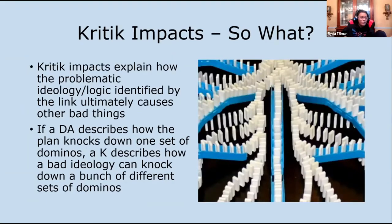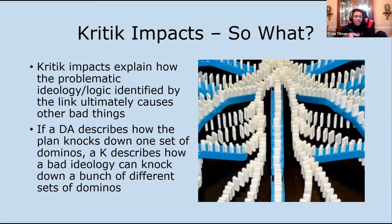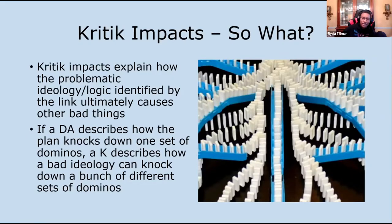You might be wondering: there's a problematic assumption we have to believe for the 1AC — why does that matter? The impact part of a critique gets into how whatever ideology, logic, or reasoning the affirmative participates in contributes to or causes something bad. Unlike a disadvantage impact that says one bad thing will happen and it's over, a critique impact is more that there are a bunch of different ways an ideology affects the world. By endorsing or promoting this ideology, it contributes to all of those different bad things in the world.